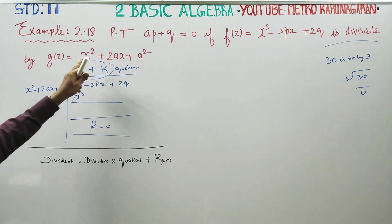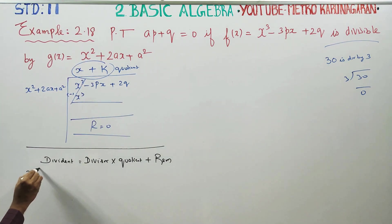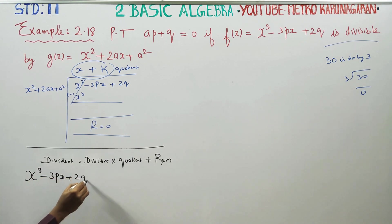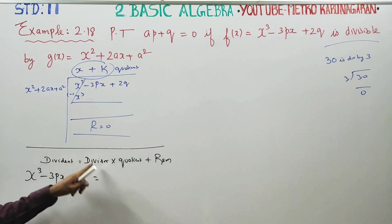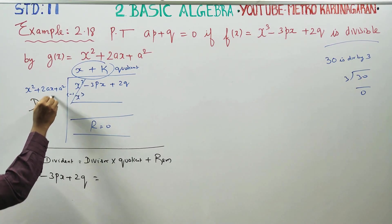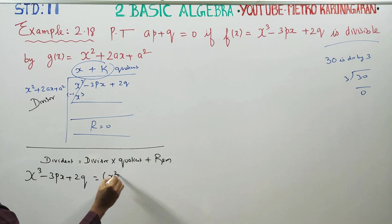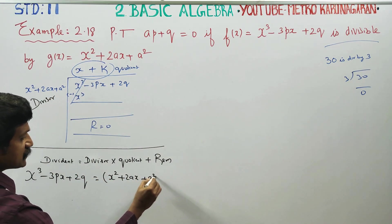Now, X cubed minus 3PX plus 2Q is our dividend. The divisor is given as X squared plus 2AX plus A squared.